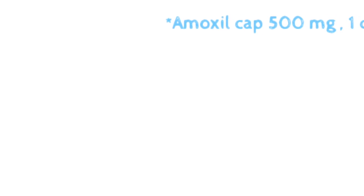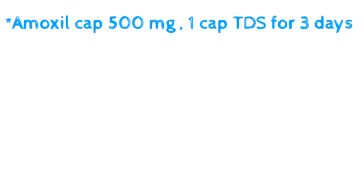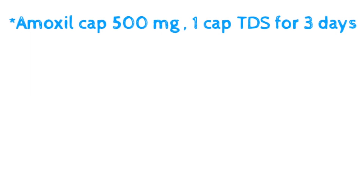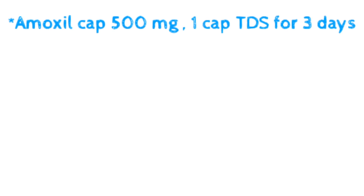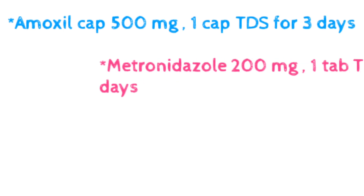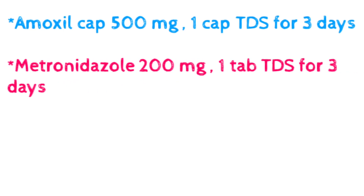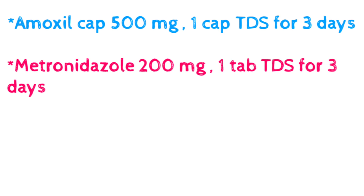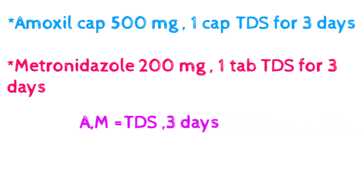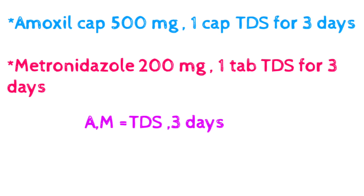The dosage of amoxicillin and metronidazole is the same as in abscess, but the duration is changed. Amoxicillin: capsule 500 mg, one capsule at a time, TDS — three times a day — but here for three days, not five days as in abscess. Same for metronidazole: 200 mg, one tablet at a time, TDS for three days. To remember: both are TDS, both for three days; amoxicillin is 500 mg and metronidazole is 200 mg — half of it.